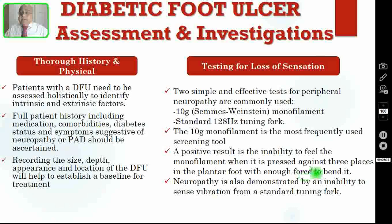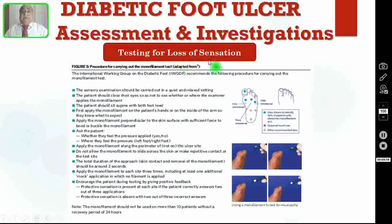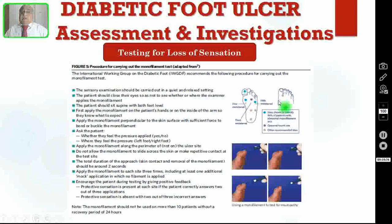The 10g monofilament is the most frequently used screening tool. A positive result is the inability to feel the monofilament when it is pressed against three places in the plantar foot with enough force to bend the filament. Neuropathy is also demonstrated by an inability to sense vibration from a standard tuning fork. Here you can see the procedure: these are the three blue areas on the foot that you have to test. You apply the monofilament and give enough pressure so that it bends. You can test on both feet. I request viewers to pause the video to read the tabular column for complete information on how to perform this test thoroughly.